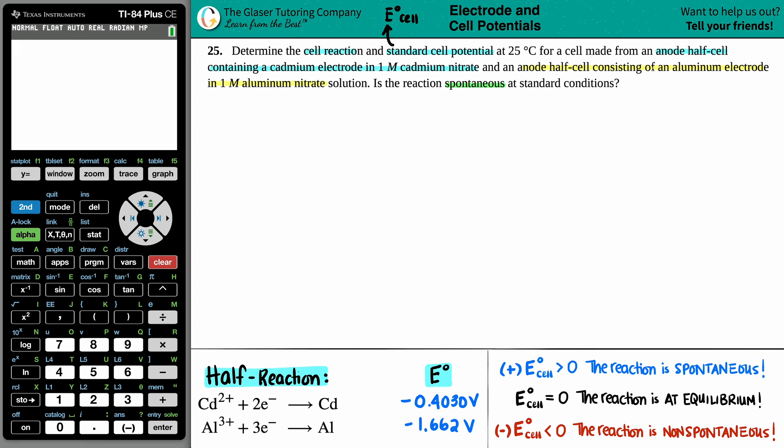They already told us that we had an anode half cell containing cadmium electrode. So they did tell us the metal that we're using. Electrode is just a fancy way for saying that I have cadmium solid going on here. And uh-oh, how is this possible? We have an anode half cell and an anode half cell.